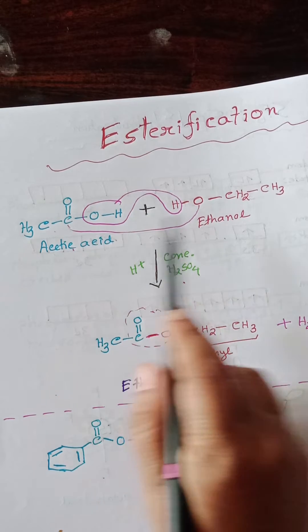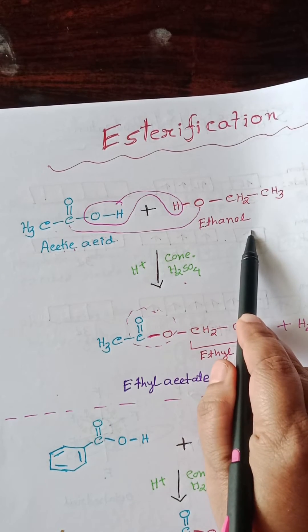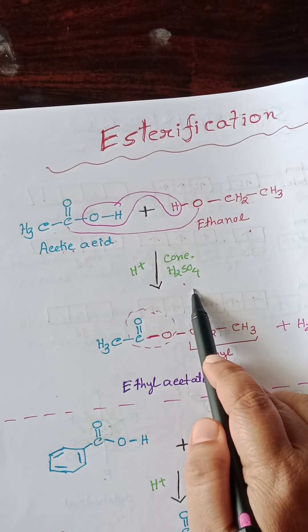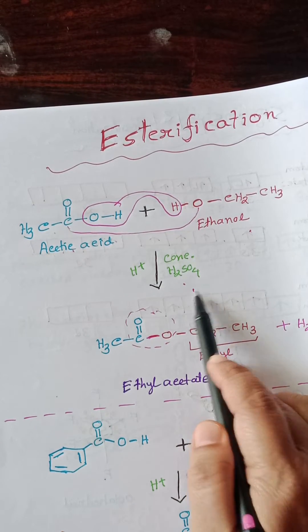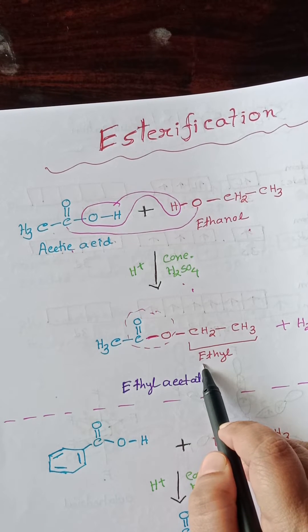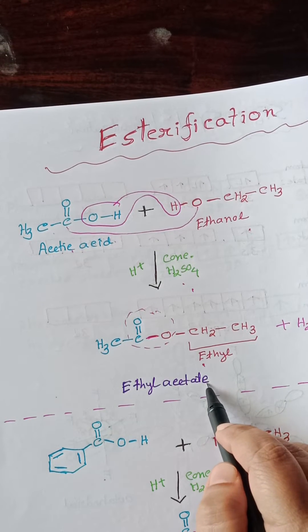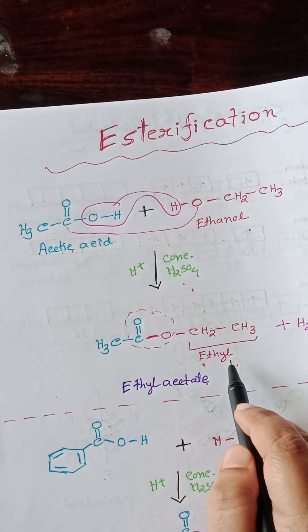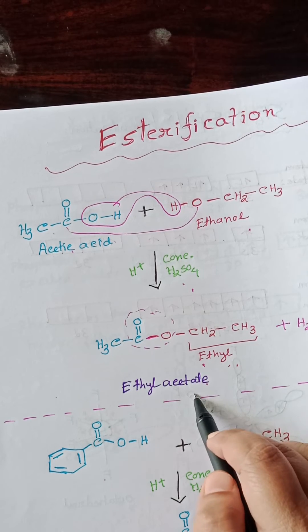So acetic acid and ethanol, when they react in the presence of concentrated sulfuric acid, we get a new compound which is an ester. The name of this ester is ethyl acetate.